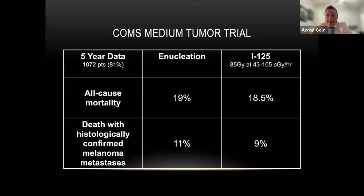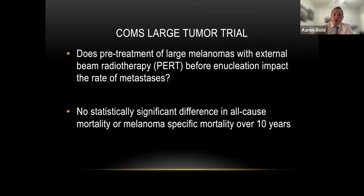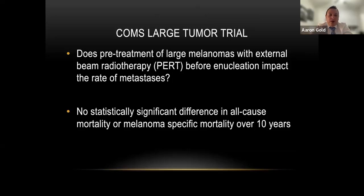Looking at five-year data comparing enucleation versus brachytherapy for medium-sized tumors, there was really no difference in all-cause mortality or melanoma-confirmed metastasis mortality. The melanoma-confirmed metastasis rate was actually slightly lower with brachytherapy, though not statistically significant. This says that when you radiate the tumor with brachytherapy, you do as good a job as taking the eye out. For large tumors, the study showed that doing pre-enucleation radiation didn't impact metastasis rate, which tells us we should try brachytherapy before going straight to enucleation if possible.